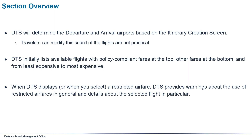DTS will determine the departure and arrival airports based on the itinerary creation screen. Travelers can modify this search if the flights are not practical. DTS initially lists available flights with policy-compliant fares at the top and other fares at the bottom.